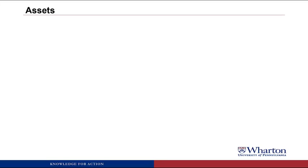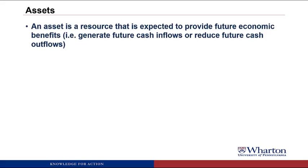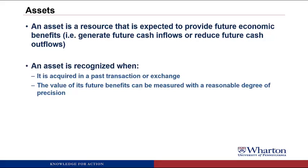Let's start with assets. An asset is a resource that's expected to provide future economic benefits. That means it's either going to generate future cash inflows or it's going to reduce future cash outflows. There are two criteria that we use to decide when to recognize an asset. First, it must be acquired in a past transaction or exchange, and second, the value of its future benefits can be measured with a reasonable degree of precision.